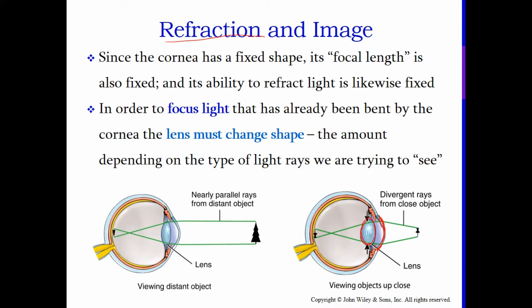When we change the bending of light to focus as we look at objects, we do it with the lens. In order to focus light that has already been bent by the cornea, the lens must change shape. The amount of bending is determined by the thickness of the lens. When you look at something far away, the ciliary muscles pull on the lens and make it thinner, allowing us to see distant objects. When you look at something close, the ciliary bodies relax, causing the lens to get thicker, and you're able to focus on close objects.